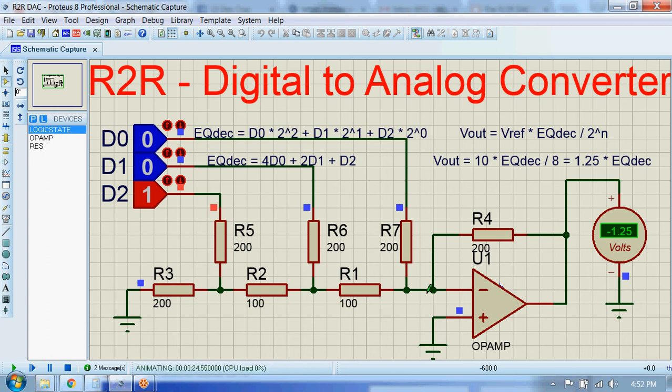Now let's see for 010. For 010, this decimal equivalent will be 4*0 + 2*1 + 0, which is 2.